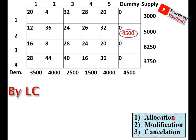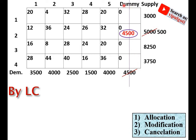Following the three steps in sequence: the first allocation is completed. Modification to the corresponding supply and demand — 4,500 quantities have been allocated. From origin 2, 4,500 quantities are supplied to the dummy retail shop. This demand is now satisfied, and 500 capacity at origin 2 is still remaining. The dummy retail shop column is cancelled because its demand is satisfied.